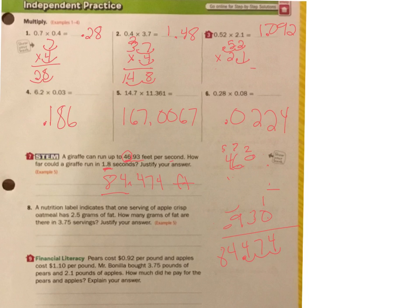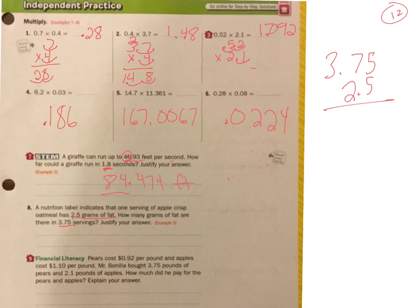Let's do number 9. I'm going to get rid of this. Give me some workspace. A nutrition label indicates that one serving of apple crisp oatmeal has 2.5 grams of fat. How many grams of fat are there in 3.75 servings? So I have 3.75 servings and 2.5 grams in each serving. So it's kind of about 4 servings and about 3 per serving. So I'm going to estimate 12. It's going to be a little bit less because I went over, but it's going to be around 12 grams. That's kind of my idea. Okay. 5 times 5 is 25. 5 times 7 is 35. 36, 37. 5 times 3 is 15. 16, 17, 18.